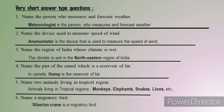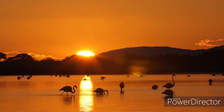Fifth question: name two animals living in tropical regions. You can write four examples: monkeys, elephants, snakes, and lions — all animals living in tropical regions. The last question: name a migratory bird. The migratory bird given in the book is the Siberian crane. Its native place is Siberia, which is in Russia, so it is called the Siberian crane.